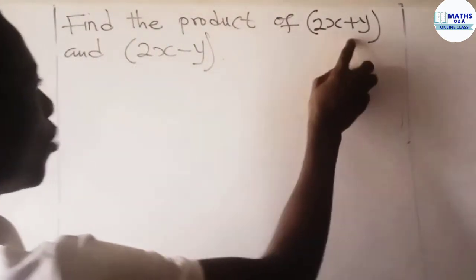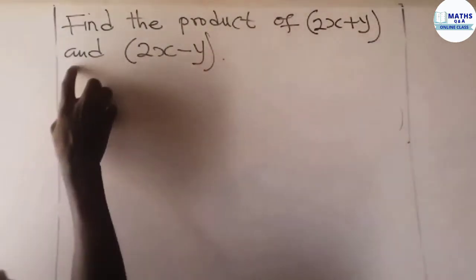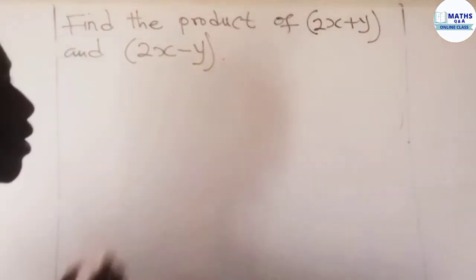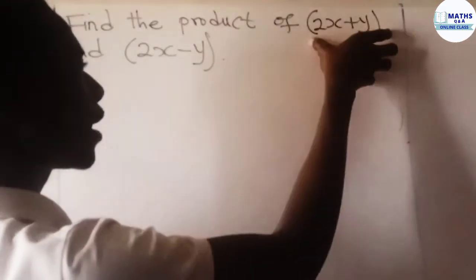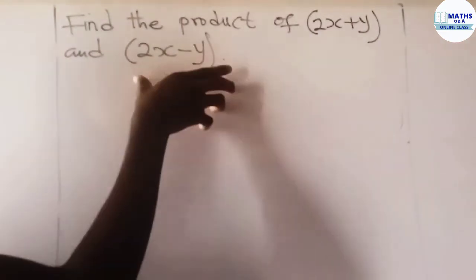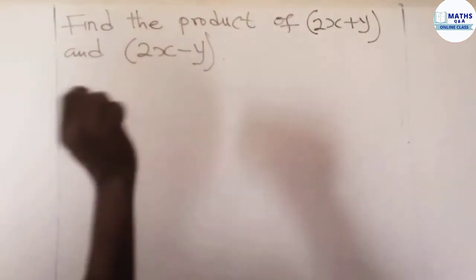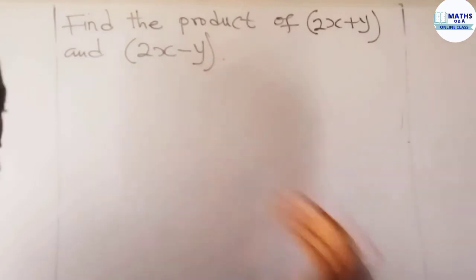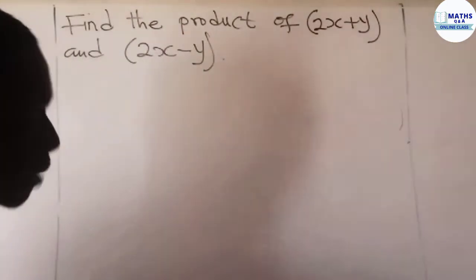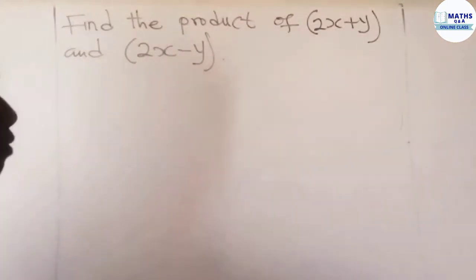Find the product of 2x plus y and 2x minus y. This means multiply 2x plus y by 2x minus y. Because in mathematics, the term product means what? The result that we get after multiplying numbers or variables.